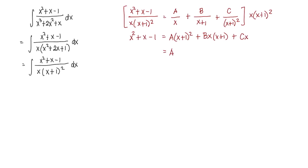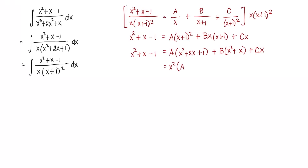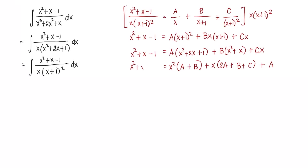Next we expand: A times the quantity x squared plus 2x plus 1, plus B times the quantity x squared plus x, plus Cx. That equals x squared plus x minus 1. We group terms by variable: the x squared terms give A plus B; the x terms give 2A plus B plus C; and the constant term gives A.